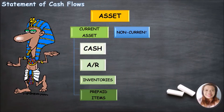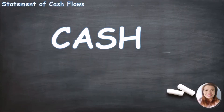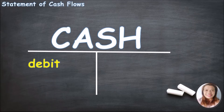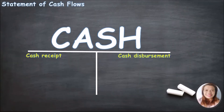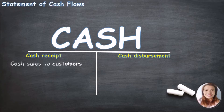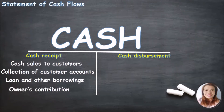If you remember the debit and credit side of the cash account, the T-account generally represents cash receipts and cash disbursements. Cash receipts may come from cash sales to customers, collection of customer accounts, loans and other borrowings, and owner's contributions.